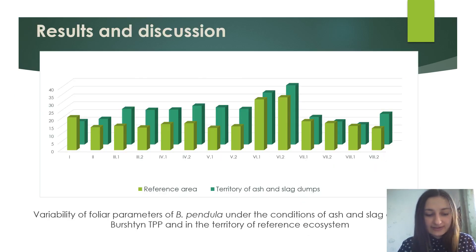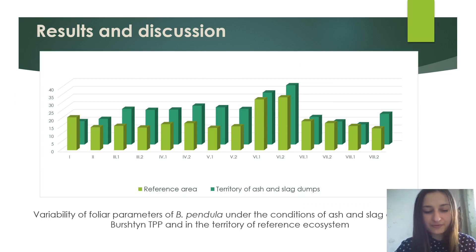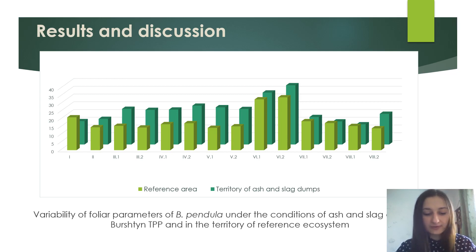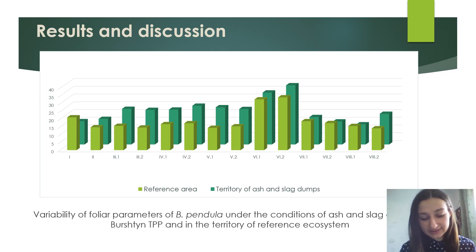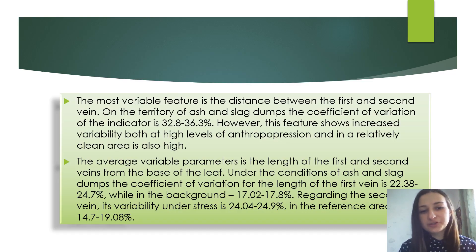The results of this study indicate a difference in the level of variability of foliar parameters of Betula pendula under the conditions of ash and slack dumps of Burshtyn Thermal Power Plant and in the territory of the reference ecosystem. It was found that the modification of foliar parameters under man-made conditions and without such conditions is not the same. The most variable feature is the distance between the first and the second vein.